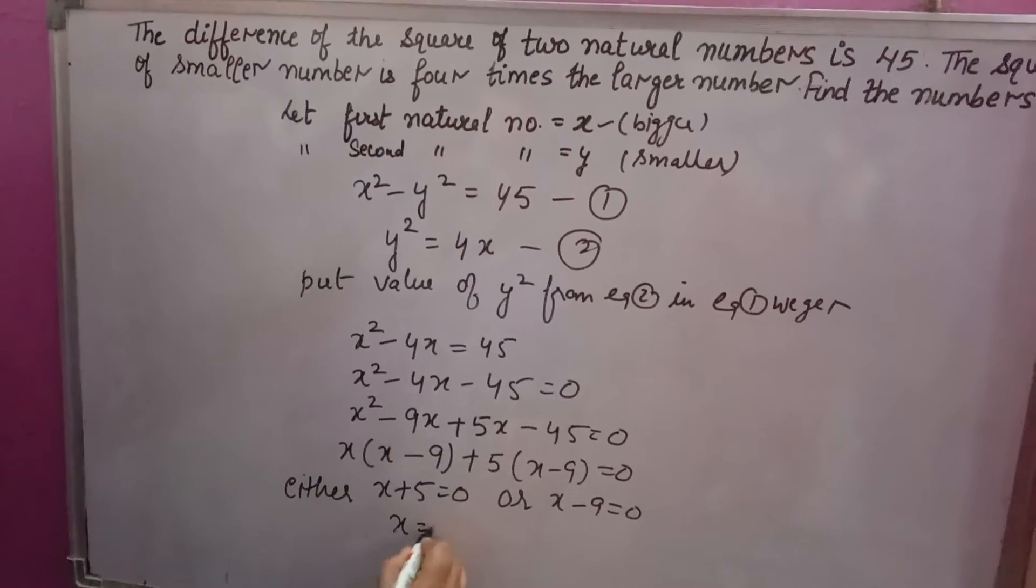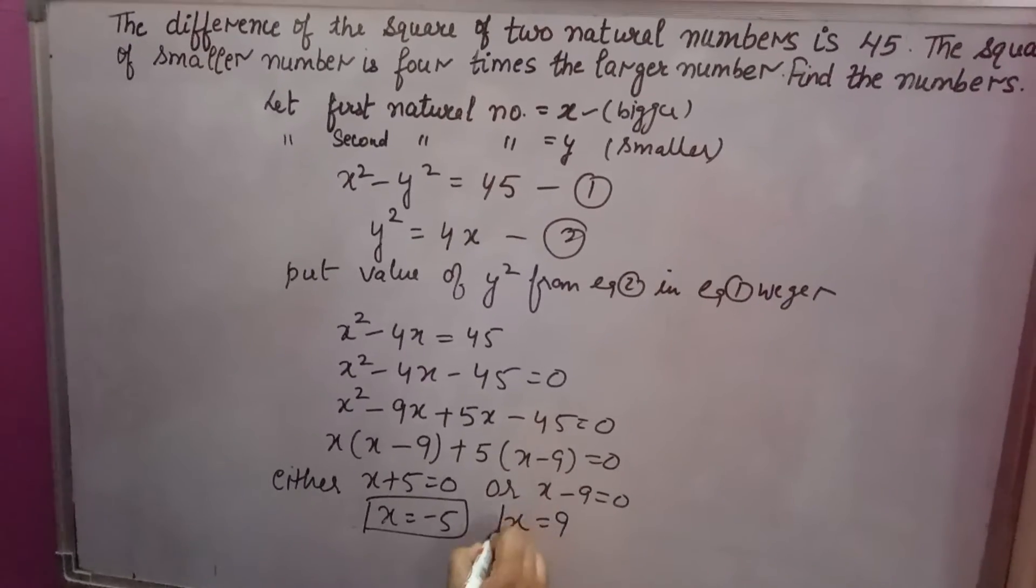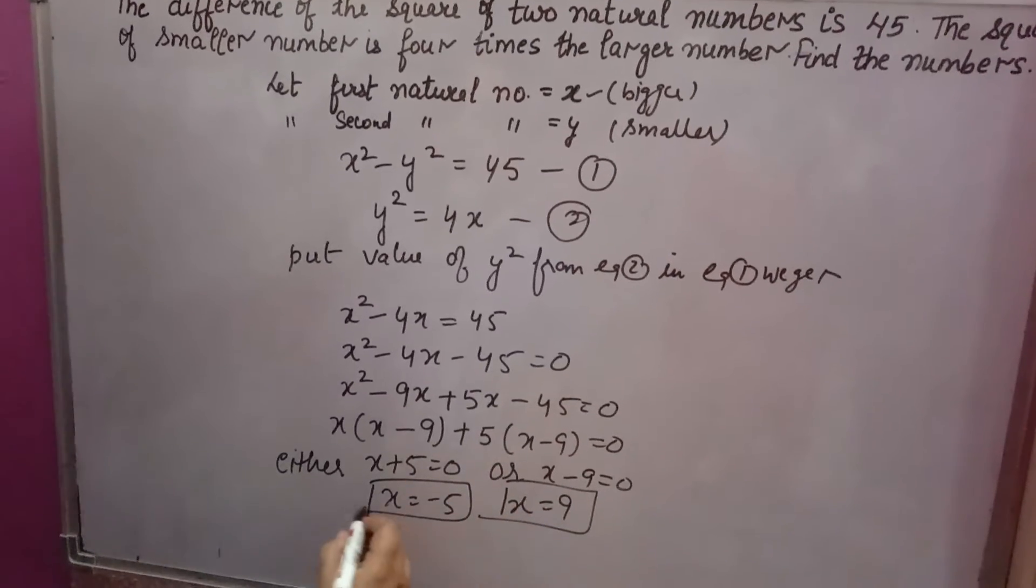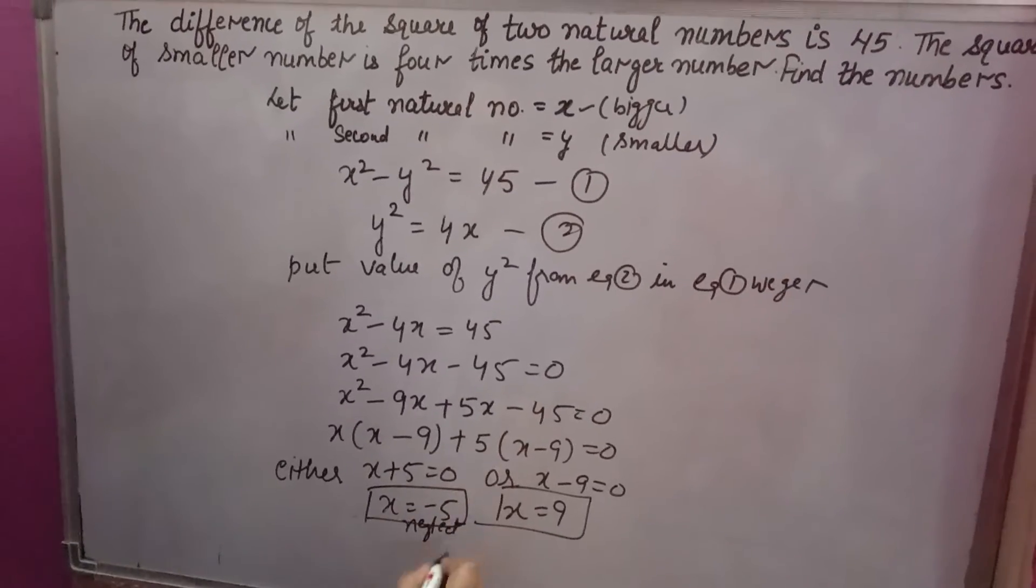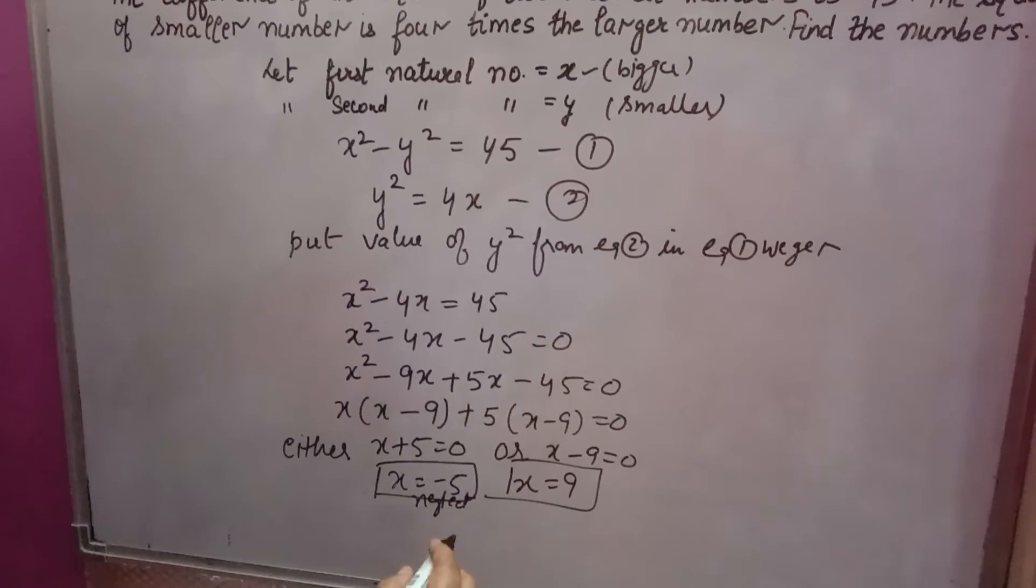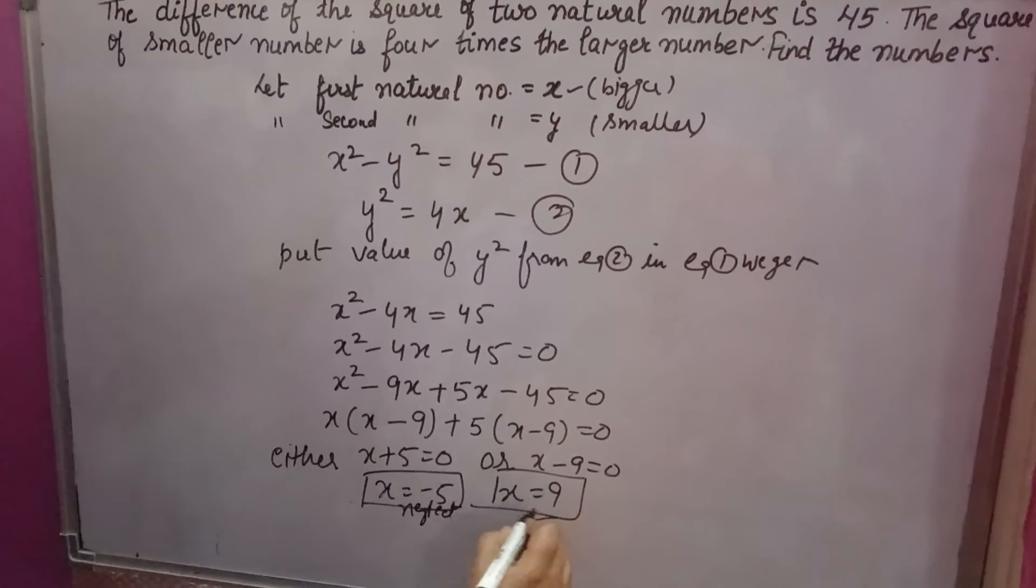From here you will get x is equal to minus 5. And from here you will get x is equal to 9. Now natural number is there, so you will neglect it because minus 5 is not natural number. Negative number is not natural number. So x is equal to 9 you will consider. So this is the answer for x.